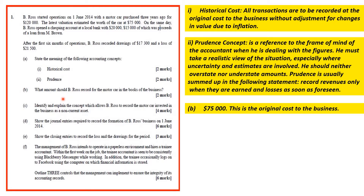Part B: what should B-Ross record for the motor car in the books of the business? It should record $75,000. This is the original cost to the business. The $120,000 is not the cost to the business — that was the cost to B-Ross three years ago. But he's now bringing it into the business, so the value or cost to the business is $75,000. It must be the cost to the business.